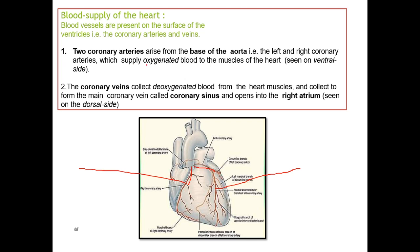The left and right coronary arteries supply oxygenated blood to the muscles of the heart. The heart is myogenic, meaning the heartbeat originates in the muscles. Coronary veins collect blood from the heart muscles and form the main coronary vein called the coronary sinus, which opens into the right atrium.